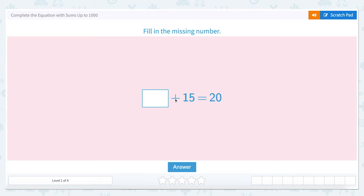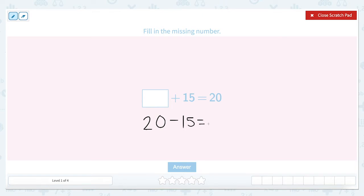Addition and subtraction are related, so when we look at blank plus 15 equals 20, we can use our scratchpad to rewrite this as 20 minus 15 equals blank. So 20 minus 15 is equal to 5. So 5 plus 15 equals 20.